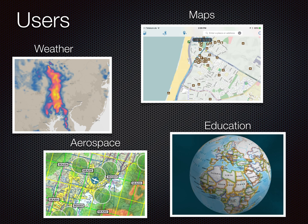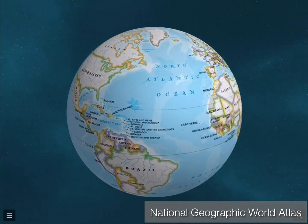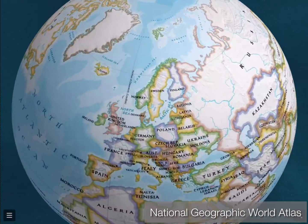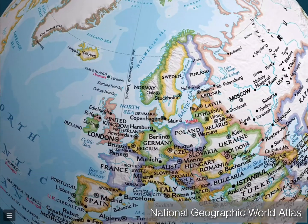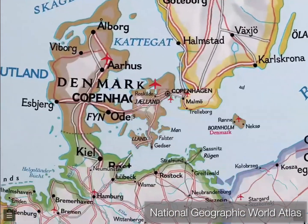There are four groups of users of WhirlyGlobe-Maply. The big ones are weather and aviation. We've also got a few map users and some education users. Let's look at one of those. This is National Geographic World Atlas. They did a version of their app with WhirlyGlobe-Maply, and it was really interesting.